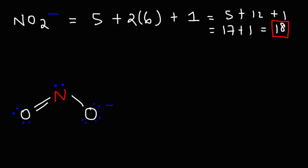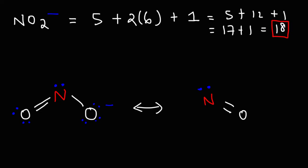So this is the Lewis structure of the nitrite ion. We can also draw the resonance structure: take a lone pair, use it to form a double bond, and break the pi bond, pushing two electrons onto the oxygen. The resonance structure shows the double bond moved from one oxygen atom to the other. Those are the two resonance structures, and the true structure is actually a hybrid of the two.